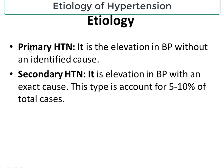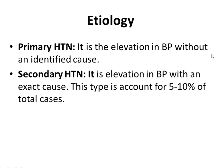Hypertension can be divided into two major classes: primary hypertension and secondary hypertension. Primary hypertension is the elevation of blood pressure without any identified cause, whereas secondary hypertension is elevation in blood pressure with an exact cause — that means we know the exact reason due to which hypertension is caused, whereas in primary hypertension we do not know the exact cause.